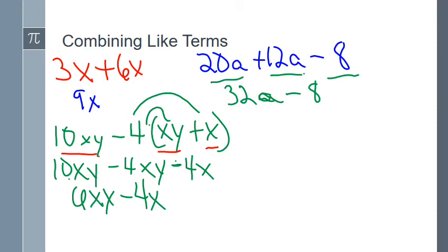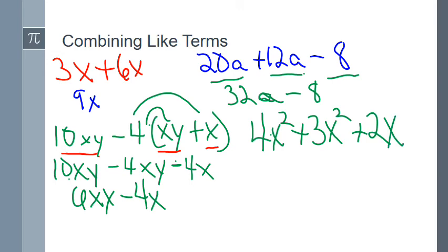Let's look at one more: 4x² plus 3x² plus 2x. The like terms here are 4x² and 3x², since x² is not a like term with plain x. Combining: 4x² plus 3x² gives 7x², and I keep the plus 2x. Final simplified expression: 7x² plus 2x. And I am done.